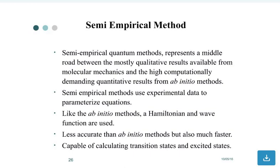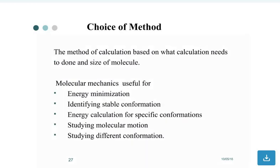Semi-empirical quantum methods represent a middle road between the mostly qualitative results available from molecular mechanics and the high computational cost of ab initio methods. Semi-empirical methods use experimental data to parameterize equations. Like ab initio methods, Hamiltonian and wave functions are used. They are less accurate than ab initio methods but also much faster, capable of calculating transition states and excited states.